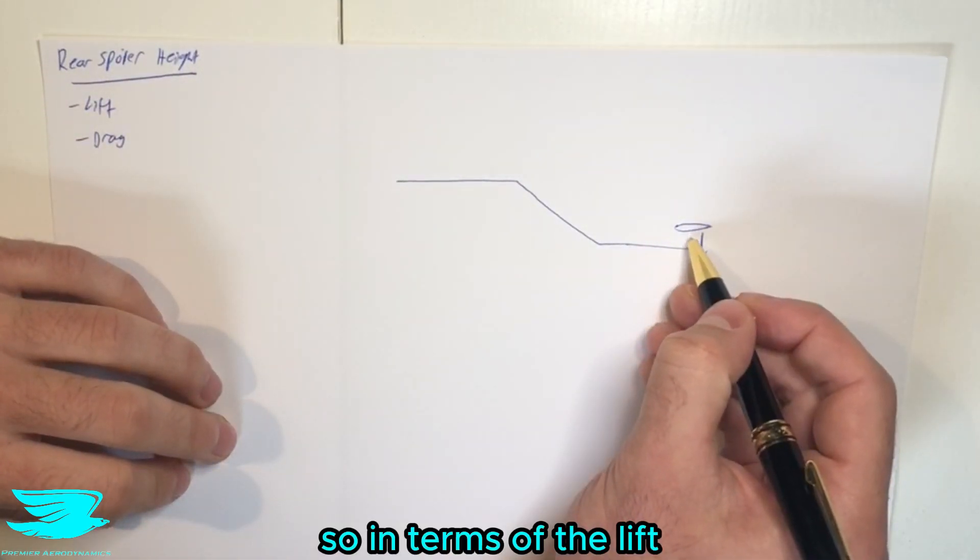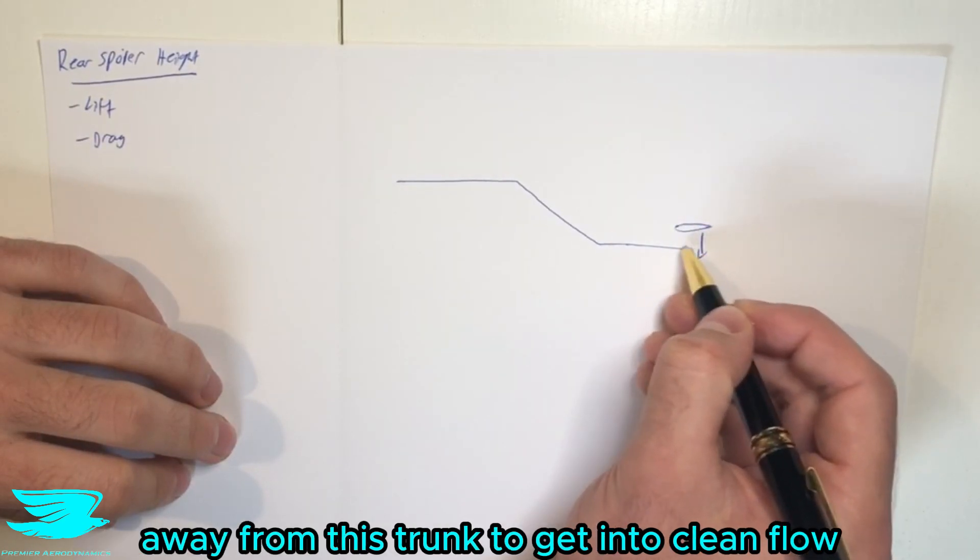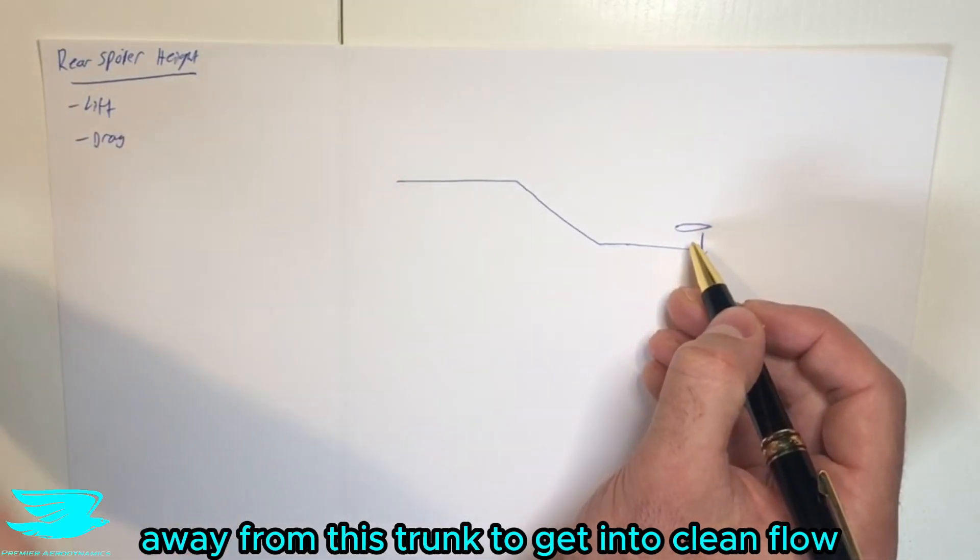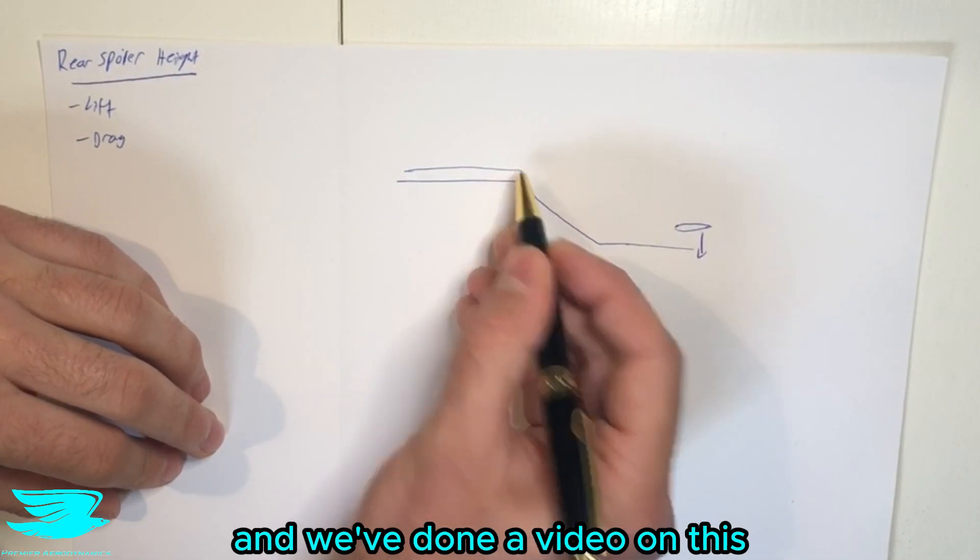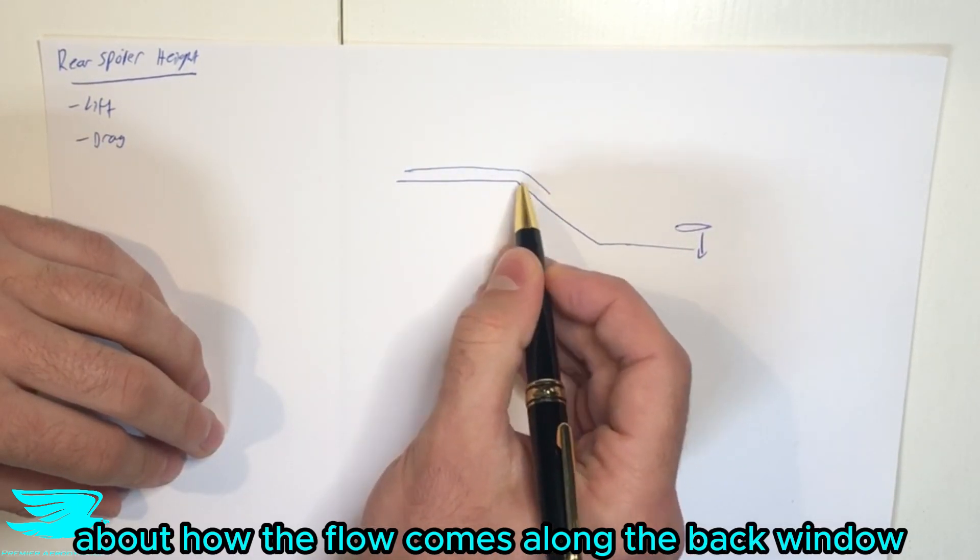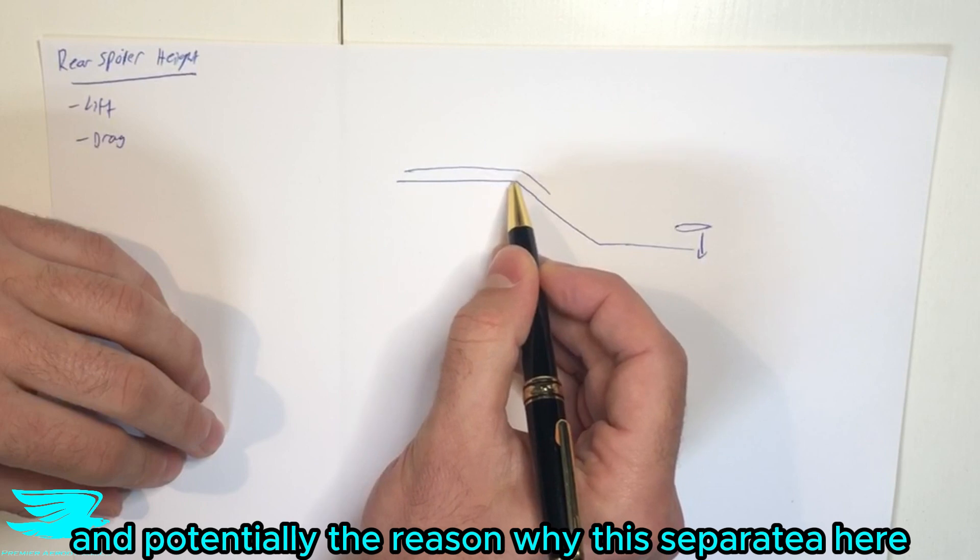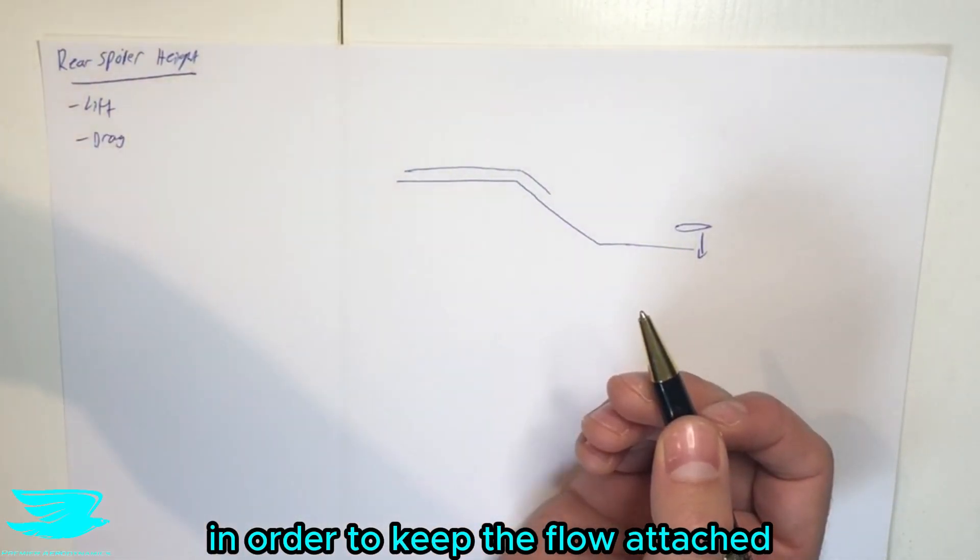So in terms of the lift, we want to make sure that this airfoil is far enough away from this trunk to get into clean flow. And the reason why is because if we have flow coming over the top here, and we've done a video about how the flow comes along the back window and potentially the reason why this would separate here and the angle of this back window needs to be in order to keep the flow attached.